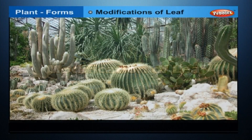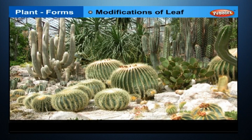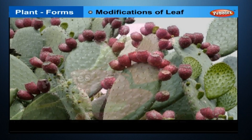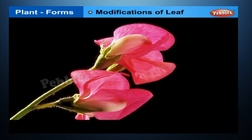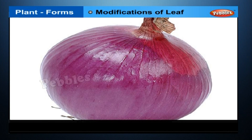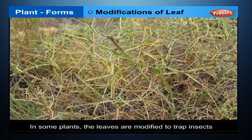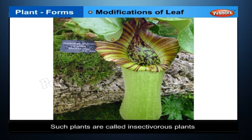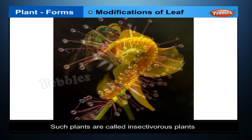Leaves can be modified in various ways. In xerophytic plants like cacti, the leaves are modified into spines that check the loss of water and help the plant conserve water. In sweet pea and garden pea, some leaves are modified into thin, coiled, thread-like tendrils that help the plant in climbing. In onions, the fleshy leaves store food material. In some plants, the leaves are modified to trap insects; such plants are called insectivorous plants. Examples include the pitcher plant, sundew, and bladderwort.